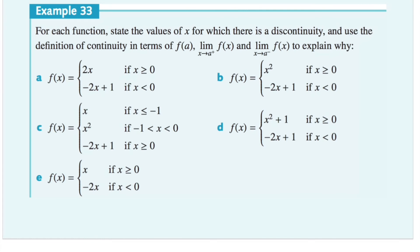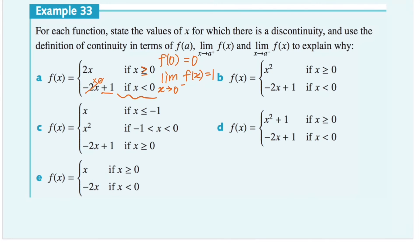In this example, for each function we need to state the value of x for which there is a discontinuity, and use the definition of continuity in terms of f(a), and the limits as x approaches a from the positive and negative sides to explain why. Question a: if we let a be 0, then 2 times 0 equals 0, so when x equals 0, the function equals 0. However, when testing the second condition — when x approaches 0 from the negative side, the second function evaluates to 1, because negative 2 times 0 equals 0, the first term disappears, and we're left with plus 1. Therefore there is a discontinuity at x equals 0.